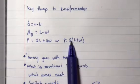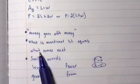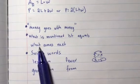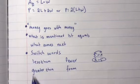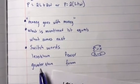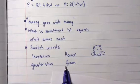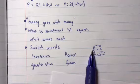Remember, money goes with money. Whatever is mentioned first equals what comes next. And then your switch words: less than, greater than, fewer than, or fewer from.